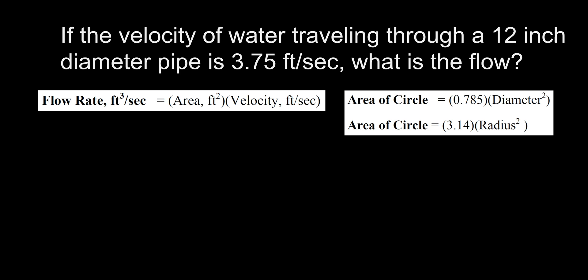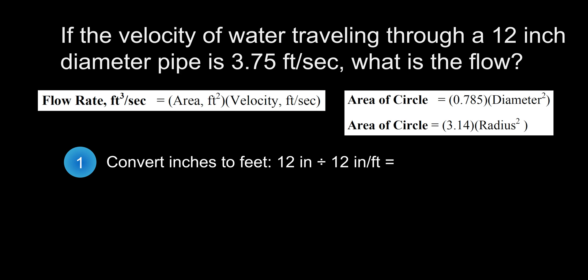To do this, we simply take the diameter of the pipe, which is 12 inches, and divide it by 12 inches per foot, equaling 1 foot, or 0.5 feet for the radius, which is half the diameter.